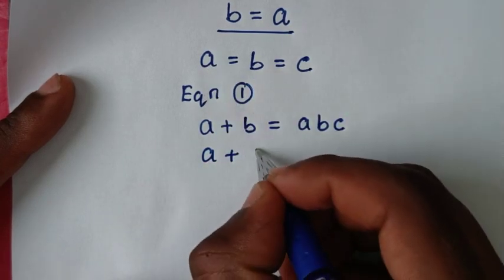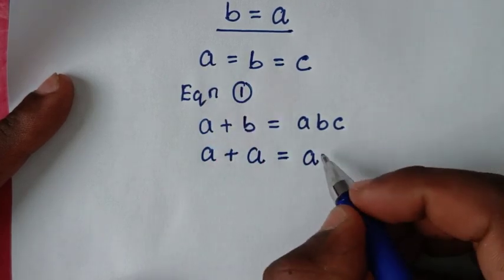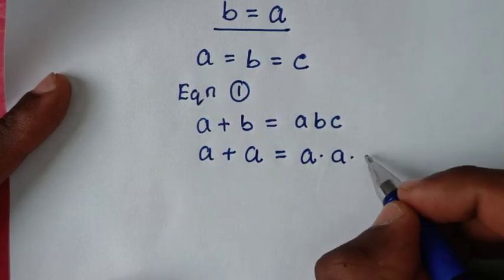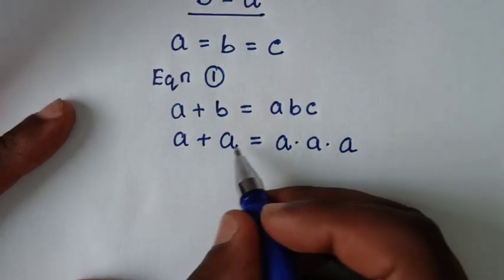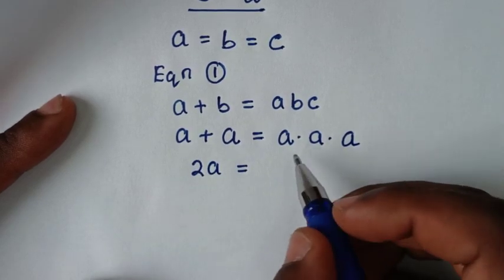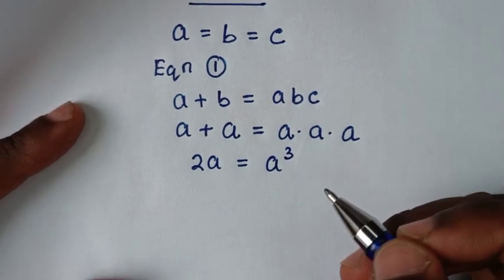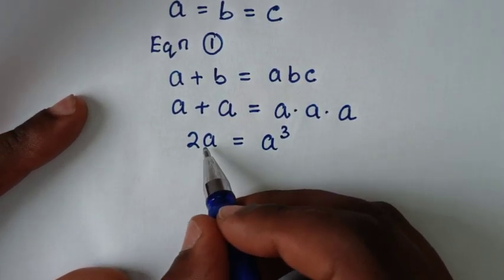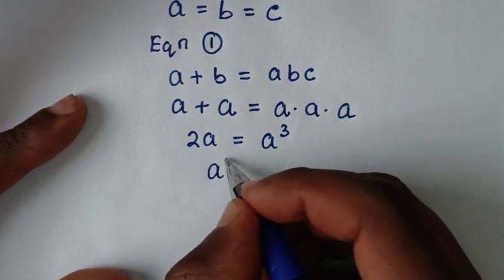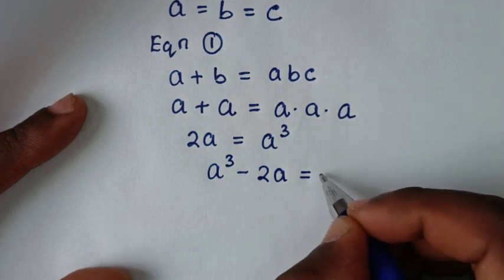Since b equals a and c equals a, substituting gives a plus a is equal to a times a times a. So 2a is equal to a cubed. Taking 2a to the right side gives a cubed minus 2a is equal to 0.